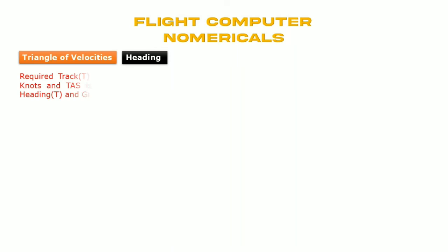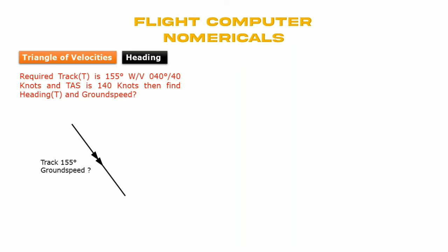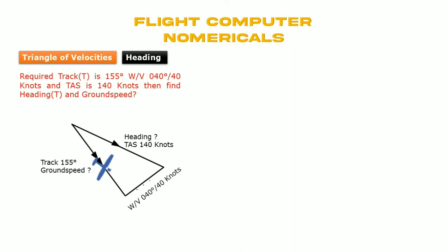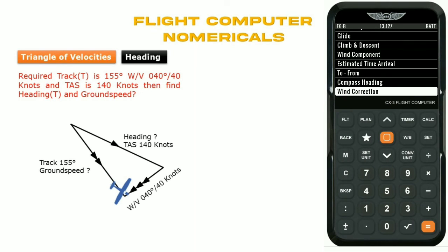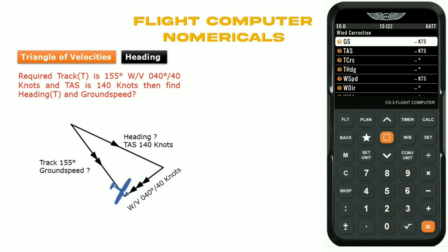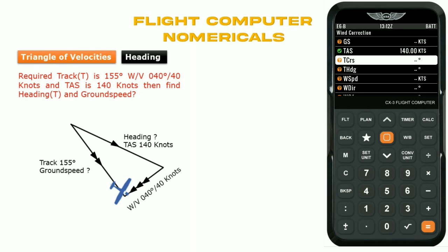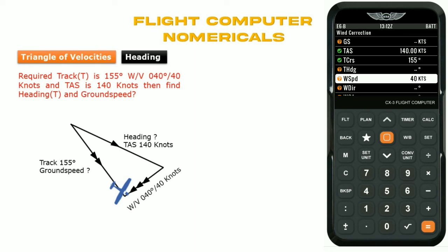Now we learn how to find heading. Example: track is 155 degrees, wind direction and velocity is 040 degrees at 40 knots, TAS is 140 knots — find heading and ground speed. Go to wind correction on the flight computer. TAS is 140 knots, track is 155 degrees — heading is to be found. Wind speed is 40 knots, wind direction is 040 degrees.